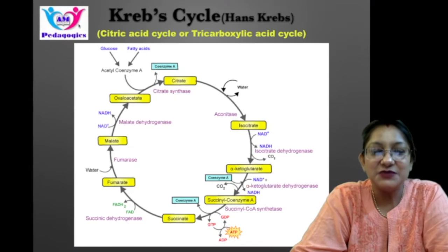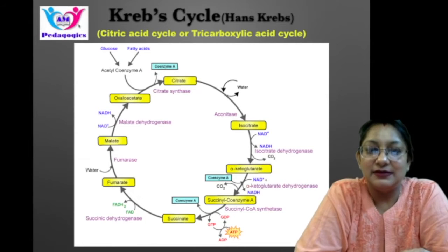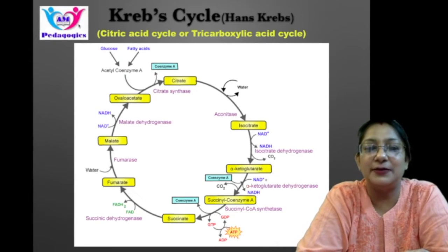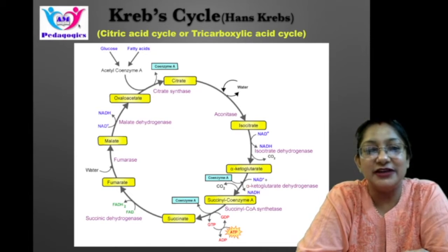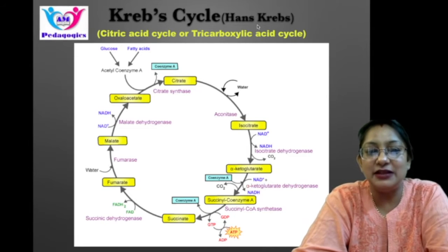Let's start. The most important cycle is the Krebs cycle, also called the citric acid cycle. It is a series of enzyme-catalyzed reactions that occur in the mitochondrial matrix. Acetyl coenzyme A is oxidized to form carbon dioxide, coenzymes are reduced, and ATP is generated in the electron transport chain. Krebs cycle was named after Hans Krebs, who got a Nobel Prize Award in 1953 for his contributions.